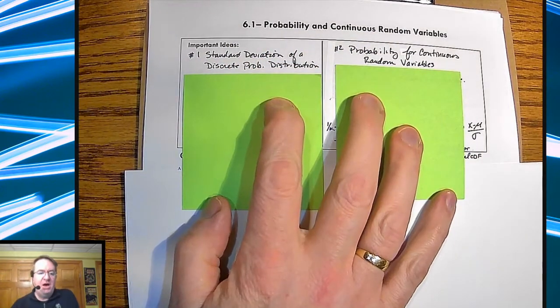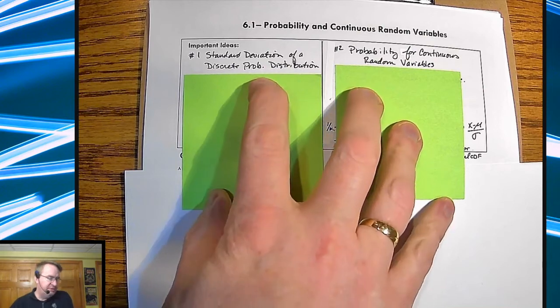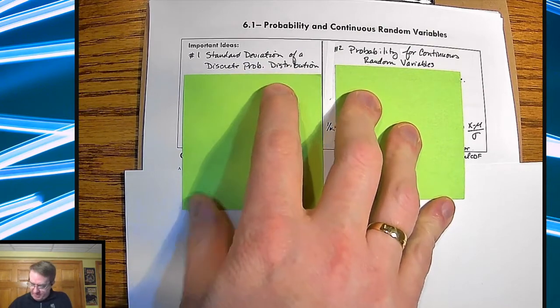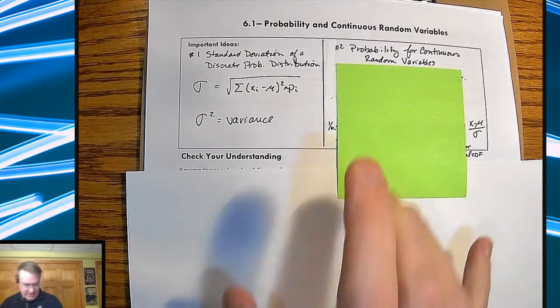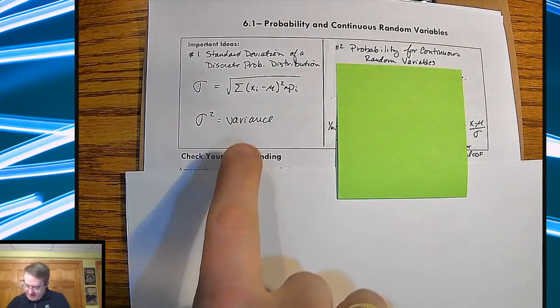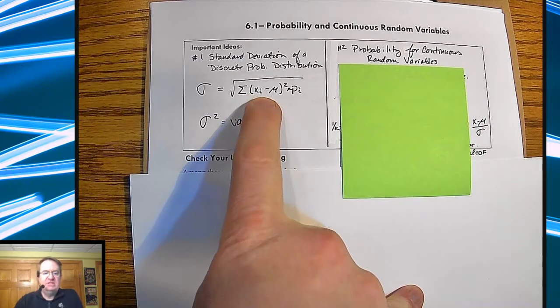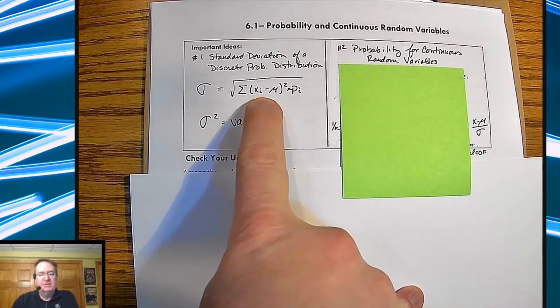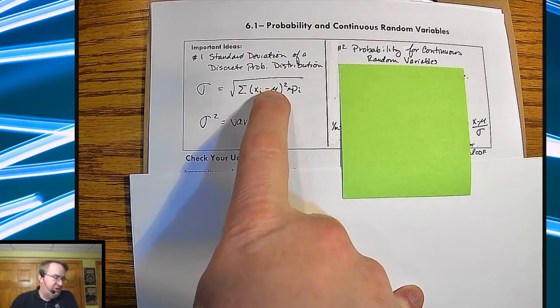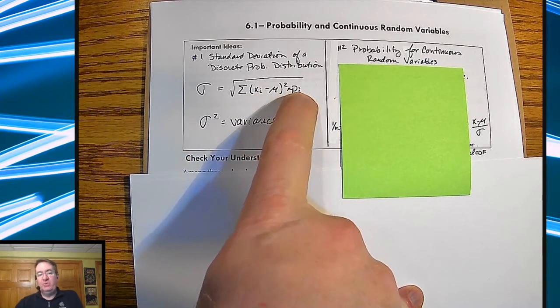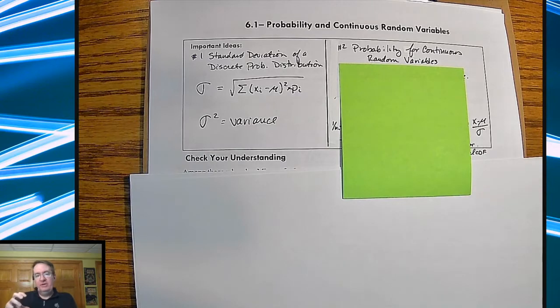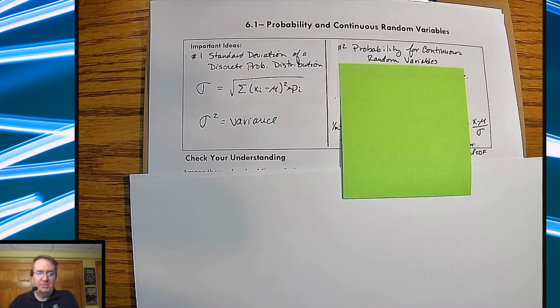Important ideas: standard deviation of a discrete probability distribution. What you're going to end up doing here is it's very similar to a standard deviation formula. The difference, however, is instead of just summing up the squares of the differences between our values and the means, we're going to multiply them through by the probability.